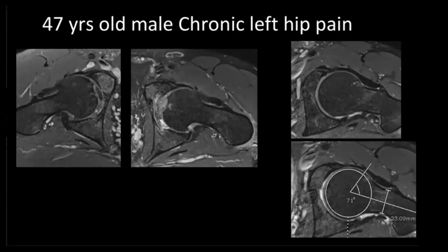Now we'll start some cases. The first case is a 47-year-old male with chronic left hip pain. This is a PD fat sat oblique axial image basically used to measure the alpha angle. I want to show you the ligamentum teres, which is normal on one side and abnormal on the other — there is edema of the ligamentum teres. The patient also has a problem on the left side. When you see his femoral head, which is aspherical, there is a small bump at the head-neck junction that we call CAM type of FAI. If you measure the alpha angle in this patient, it is 71 degrees; normal should be below 60 degrees. So 55 is normal, 55 to 60 is borderline, more than 60 is abnormal. So in this case, there is CAM FAI with ligamentum teres edema — this is a new finding.